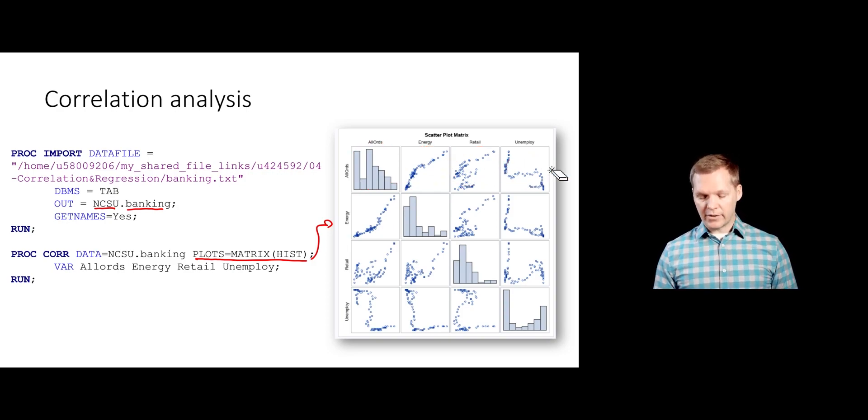If we're just looking at this, we can see there is a very strong linear relationship here. This is pretty strong, pretty linear. There appears to be some linear relationship here between all ords and retail, but it's not super strong. Then there's a slight negative relationship here between all ords and unemployment. We're gaining some information here, but we might want to do tests for the population values. We might want to understand whether we can say that the correlations we're seeing are significant, significantly different from zero or not.